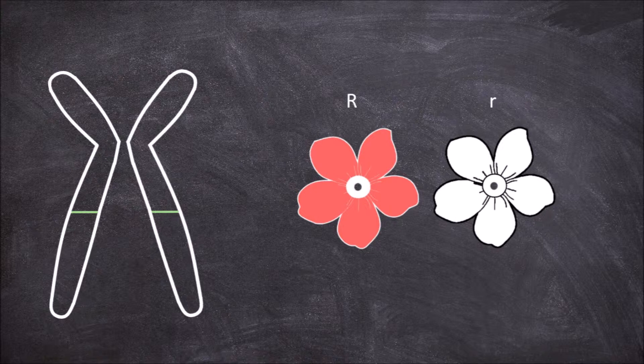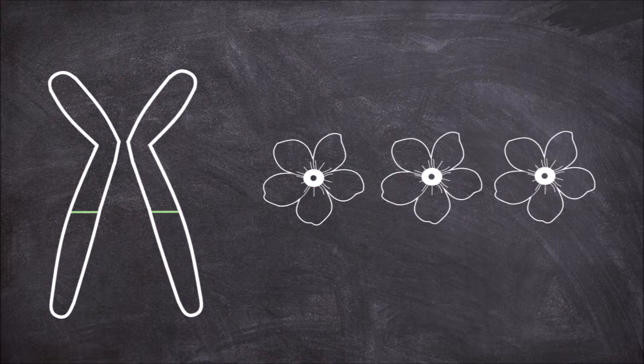Genotype refers to the genetic makeup, so the specific genes an individual has. In the flower example there would be three potential genotypes.